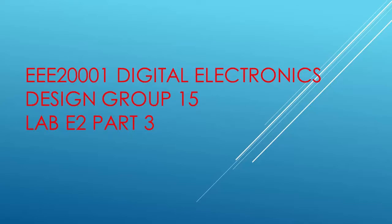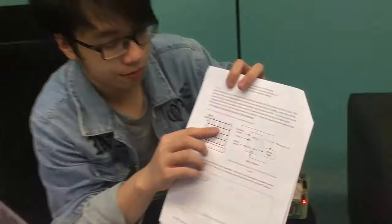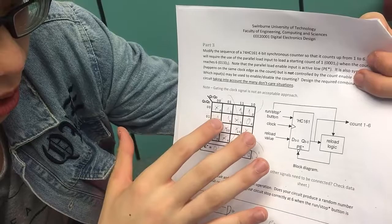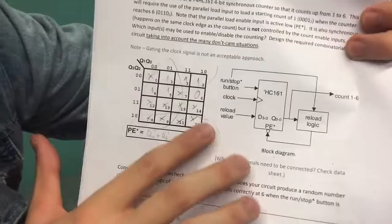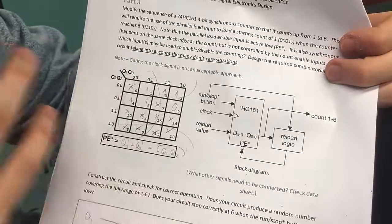Hello, I'm Shrad. I'll be explaining part 3 of the lab. As you can see here, this is the schematic for lab 2 and this is the truth table and Karnaugh map for the reload logic. The reload logic is the PE where it copies down the D inputs. I will be making the D all connected to ground, which is zero. The logic for PE is that when the counter Q1, Q2 reads count as 6.